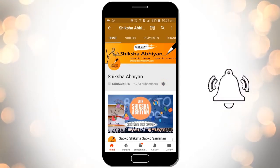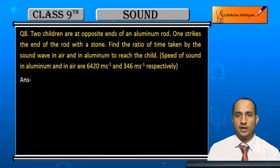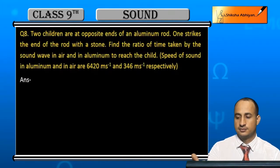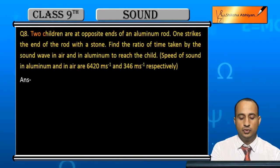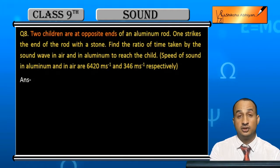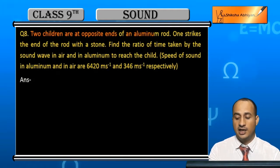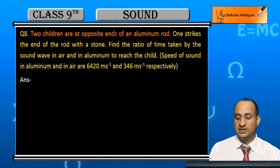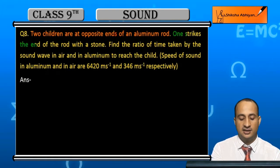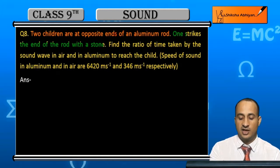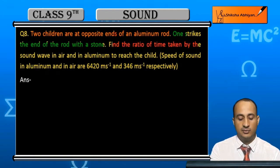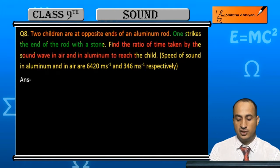Now students, the eighth question — question two: two children are at opposite ends of an aluminum rod. One child strikes one end of the rod with a stone. Find the ratio of the time taken by the sound wave in air and aluminum to reach the other child.